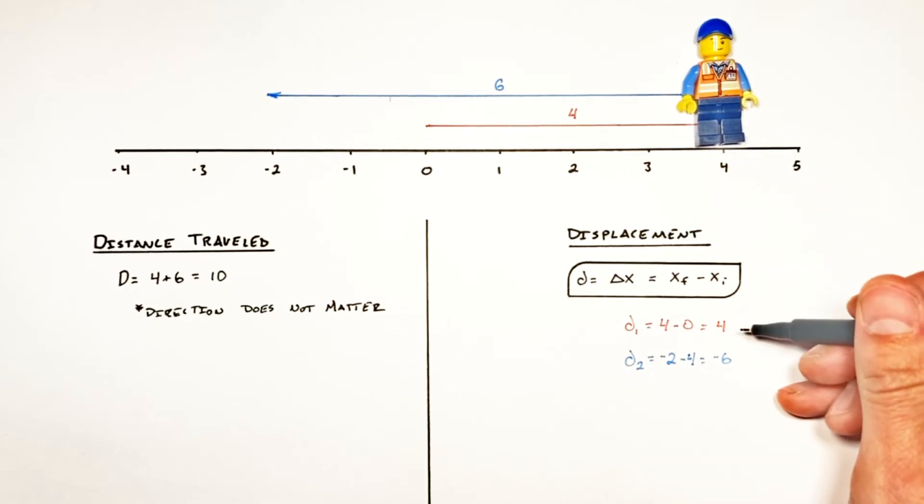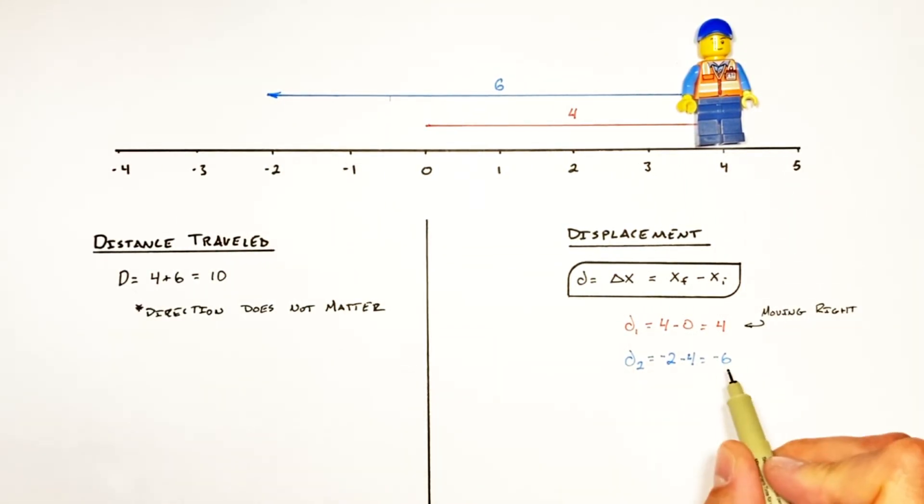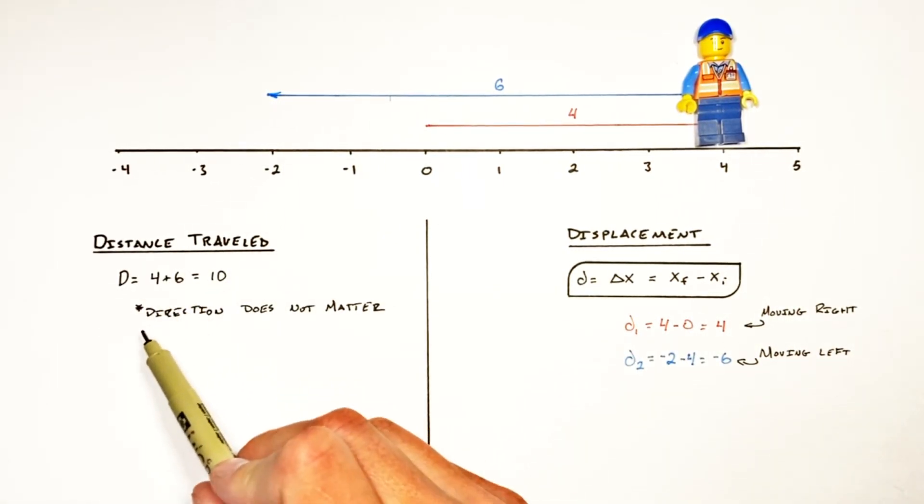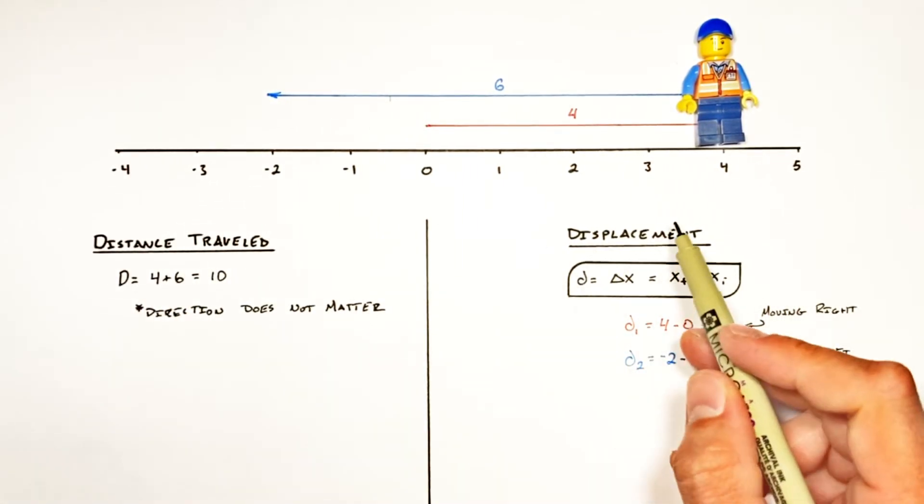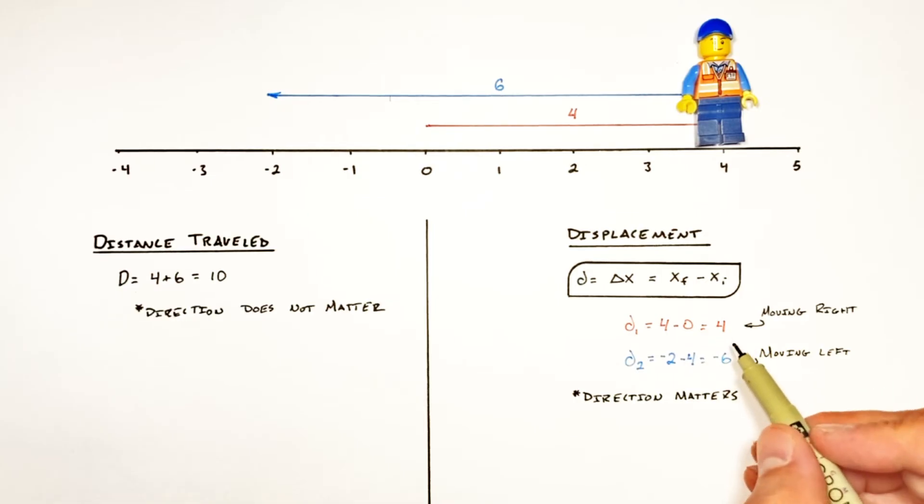Well negative two minus four is negative six. And the big takeaway from this is that the direction here mattered. Moving to the right produced a positive displacement. But moving to the left produced a negative displacement. So the main conclusion here being that unlike distance traveled where direction does not matter, with displacement, direction does matter.